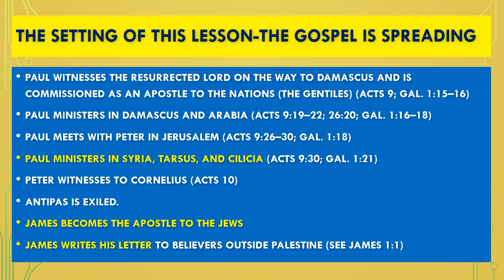Paul witnessed the resurrected Lord Jesus on the road to Damascus and received his commission as apostle to the Gentiles. He ministered in Damascus and Arabia, then met with Peter in Jerusalem where they confirmed his conversion was real. Paul then ministered in Syria, Tarsus, and Cilicia. Peter witnessed to Cornelius, who became saved. James became the apostle to the Jews and Paul the apostle to the Gentiles. James then wrote his letter to believers outside of Palestine — that is where we are in our lesson today.